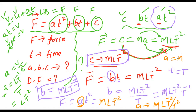A = MLT⁻² / T². Now simplify: bring T² to the numerator as T⁻². You have T⁻² × T⁻² — wait, T in numerator is T⁻², and dividing by T² means the exponent becomes −2−2 = −4. So A = MLT⁻⁴.